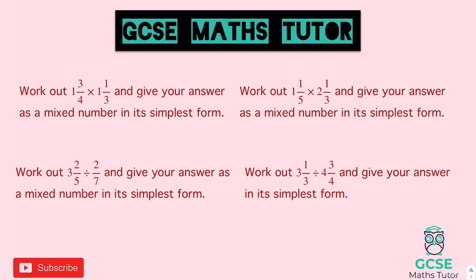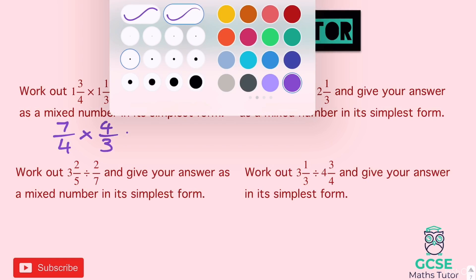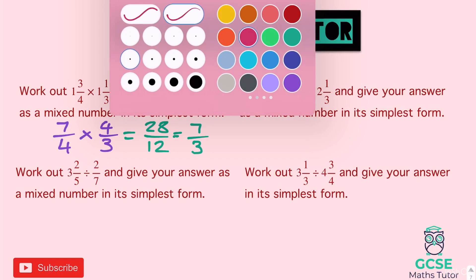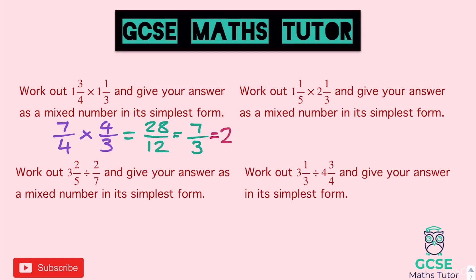Let's go over the answers for the practice questions — some multiplying, some dividing. First multiplication: one and three quarters times one and one third. Top-heavy: seven quarters times four thirds. Multiply top: seven times four is 28. Multiply bottom: three times four is 12. Simplify first — top and bottom divide by four — giving seven over three. Then as a mixed number: three goes into seven twice with a remainder of one, giving two and a third.